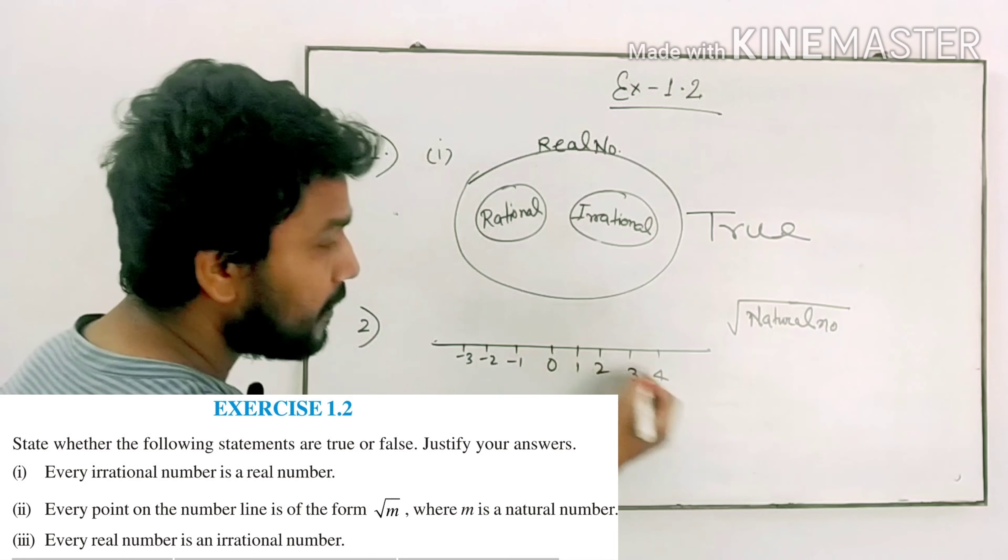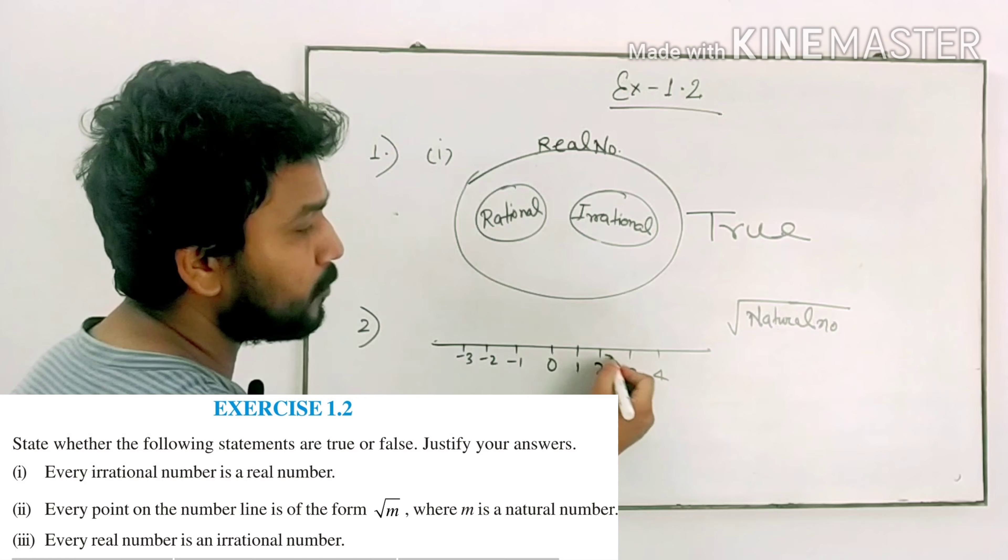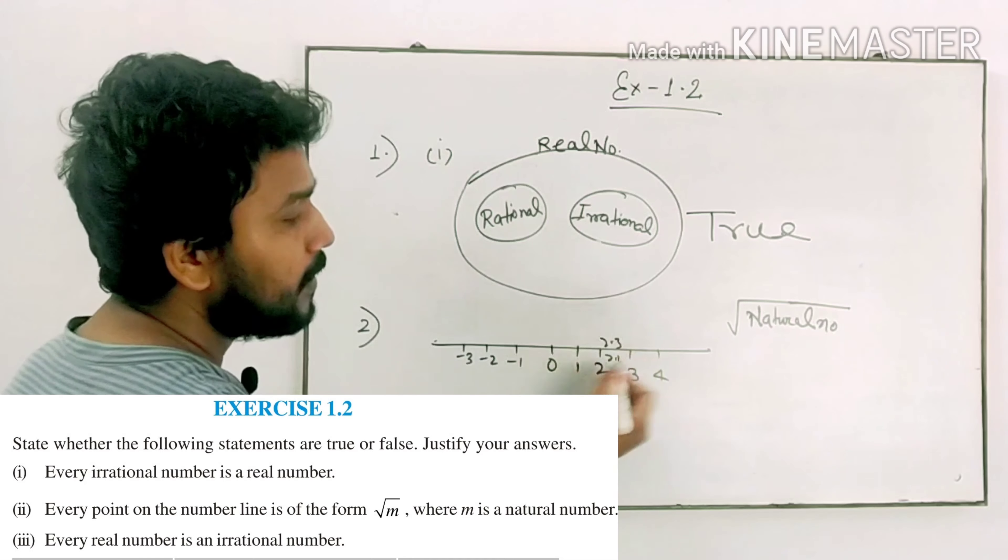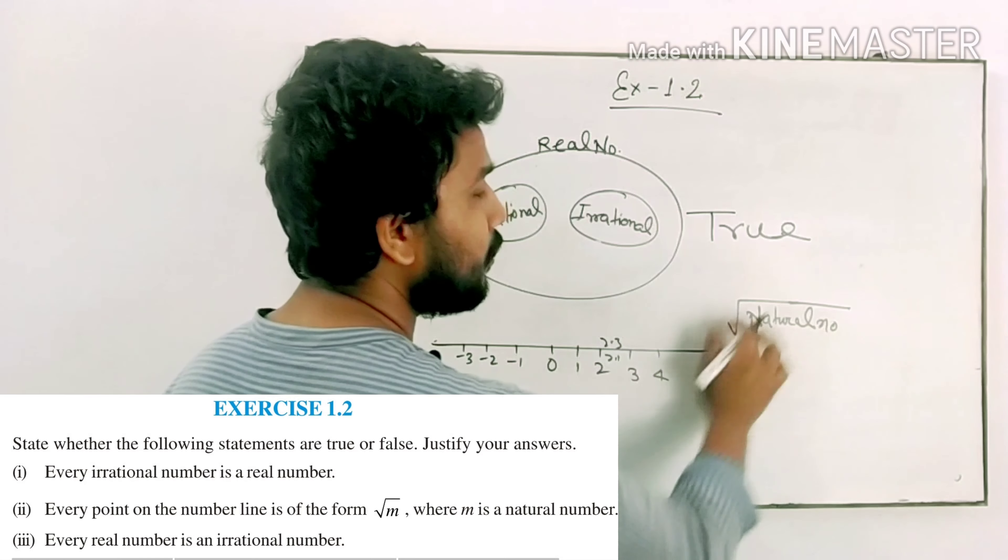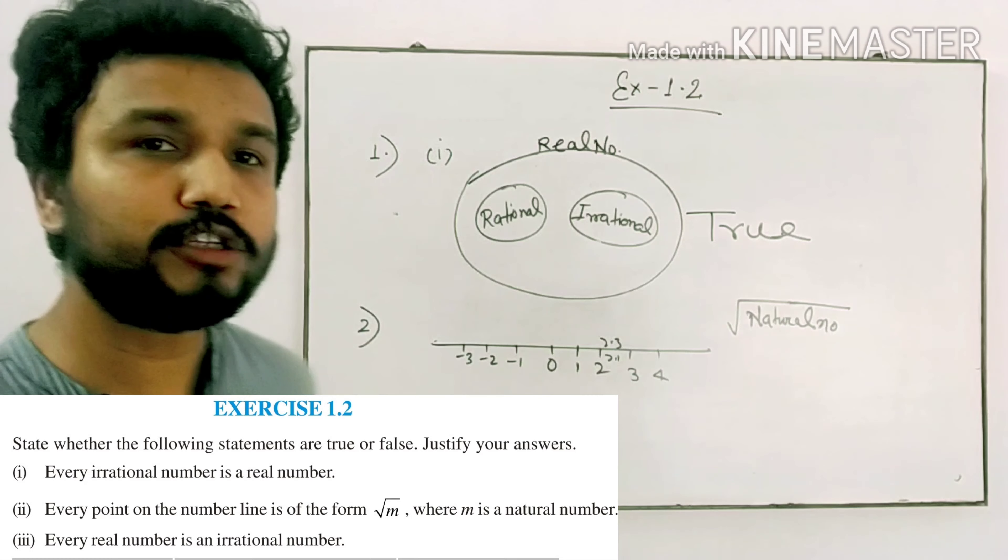Because there are many numbers in decimal. There will be 2.1, 2.3. Now all these numbers cannot be represented as root of a natural number. Second answer is false.